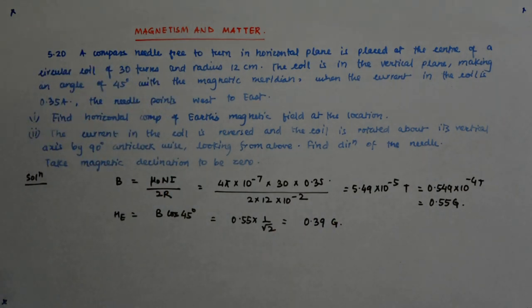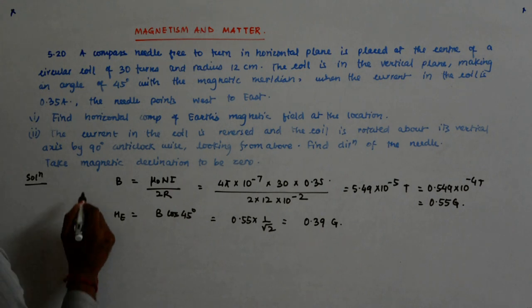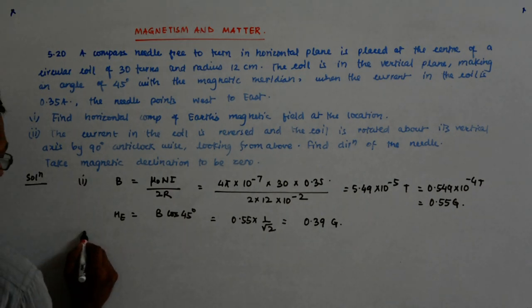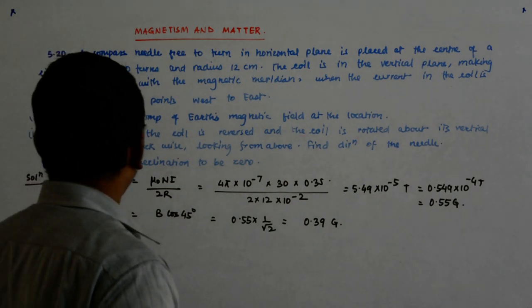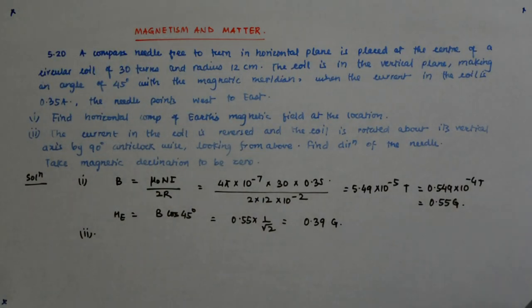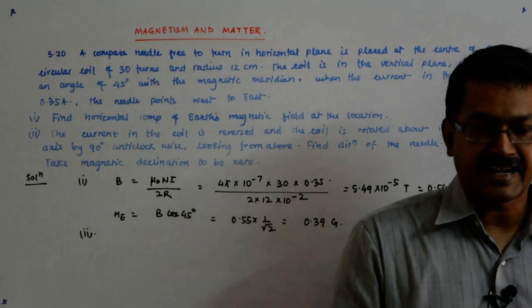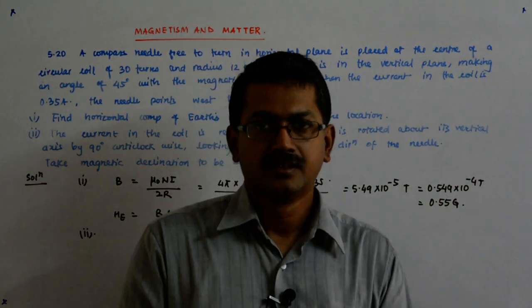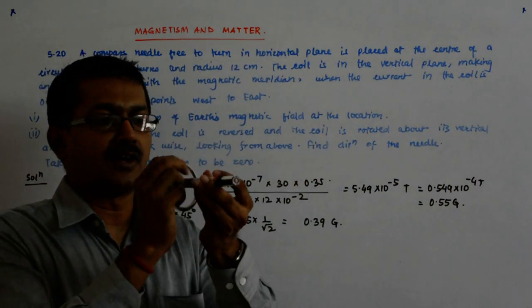That's all. Now I come, so this was my first part. What is my second part? My second part is this: the current in the coil is reversed. Now start tracking. They say that the current in the coil is reversed.